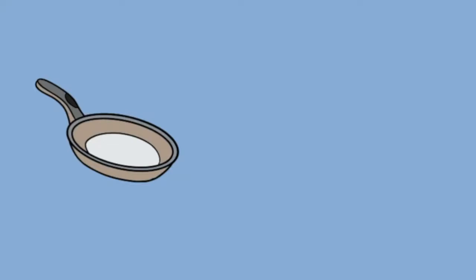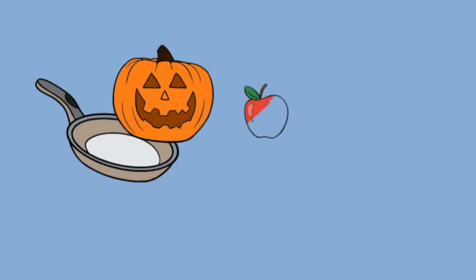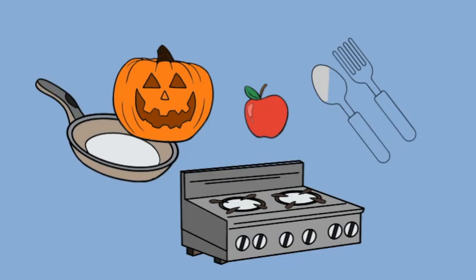Combine the pumpkin puree, maple syrup, brown sugar, three quarters teaspoon pumpkin pie spice, salt and one cup of apple juice in a large pot over medium heat. Bring to a low simmer and then remove from heat.